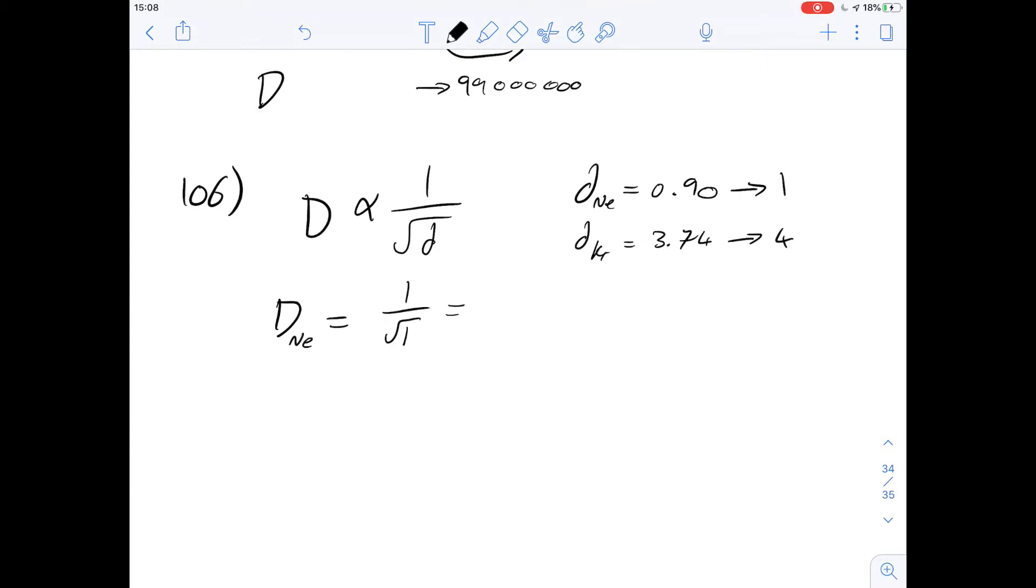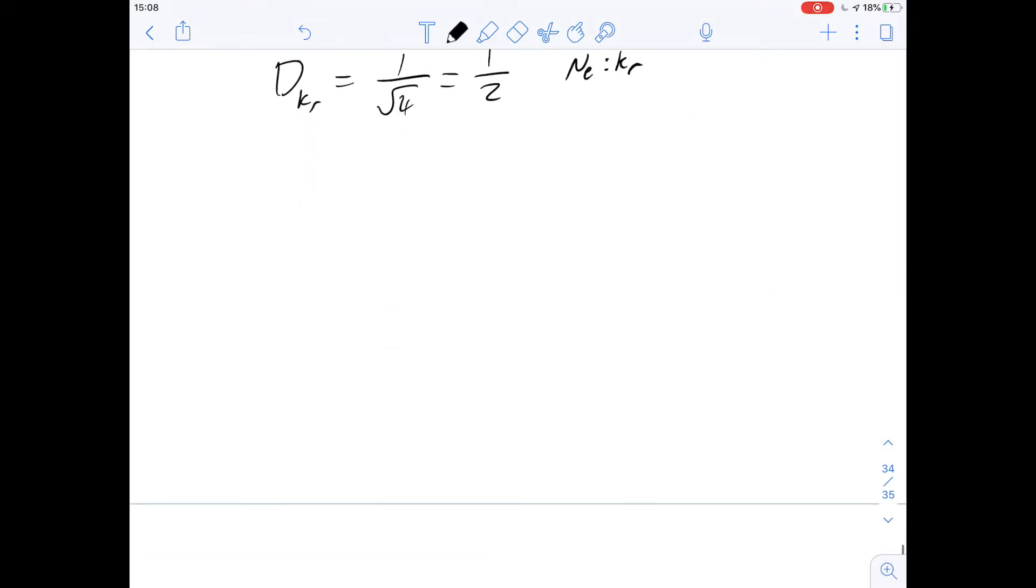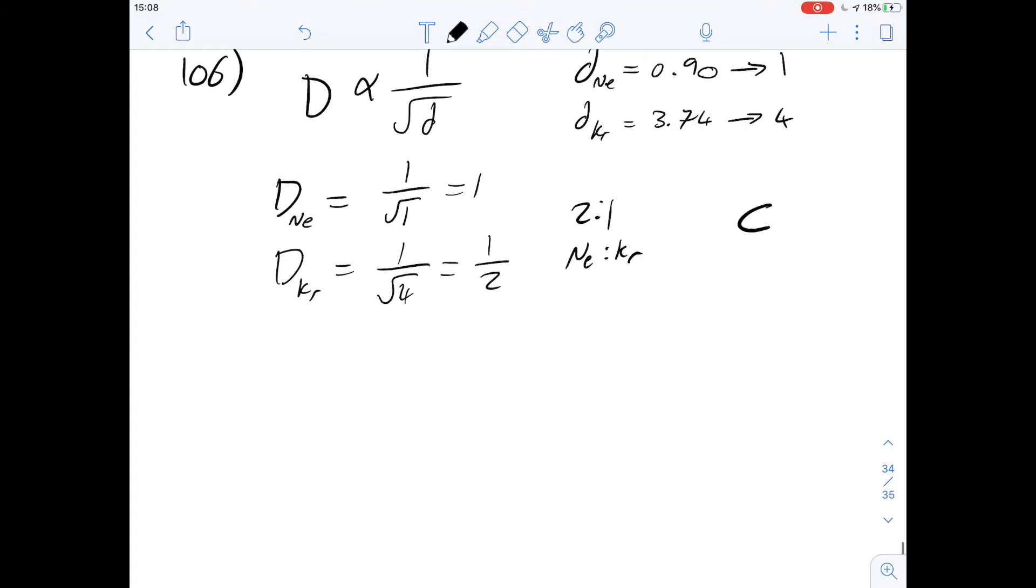So let's work out the rate for neon, which is going to be 1 over root 1, which is obviously just going to be 1. And then if we work out the rate for krypton, it's going to be 1 over root 4, which is 1 over 2. So that means it's going to be a 2 to 1 ratio of neon to krypton, which means neon diffuses twice as fast as krypton. That means the answer for 106 is going to be C.